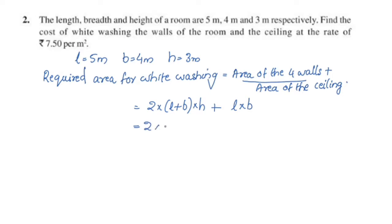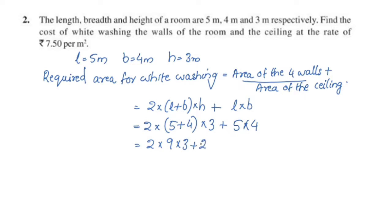2 into (L plus B) into H, where L is 5, B is 4, H is 3, plus L into B which is 5 into 4. That gives 2 into (5 plus 4) into 3 plus 5 into 4, equals 2 into 9 into 3 plus 20, equals 54 plus 20, equals 74 m². The rate is Rs. 7.50 per m².